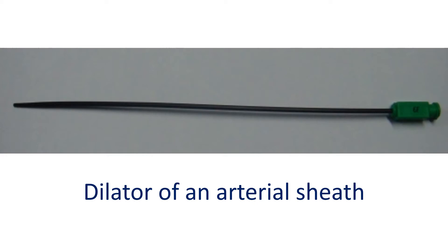The dilator of an arterial sheath prevents damage to the tip of the arterial sheath, which is softer than the dilator and can become frayed. Care is taken to keep the tip of the dilator well beyond the sheath during introduction, as the dilator may slip back within the sheath if there is resistance. This can occur if it is a repeat catheterization and there is fibrosis in the tract following healing from the previous procedure.